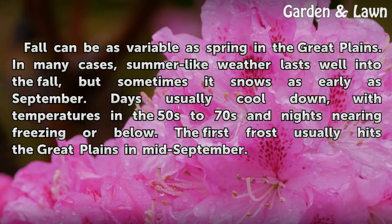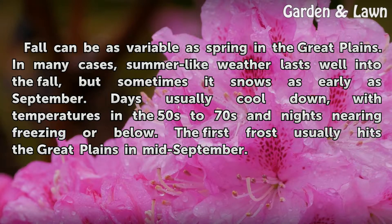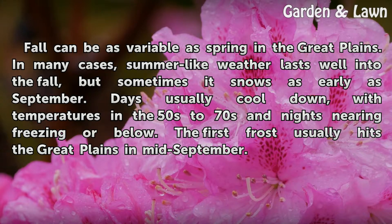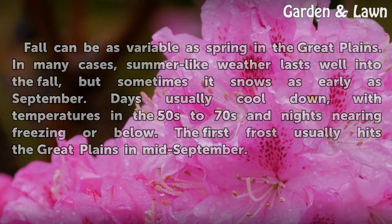Fall can be as variable as spring in the Great Plains. In many cases, summer-like weather lasts well into the fall, but sometimes it snows as early as September. Days usually cool down, with temperatures in the 50s to 70s and nights nearing freezing or below. The first frost usually hits the Great Plains in mid-September.